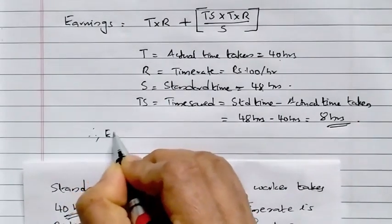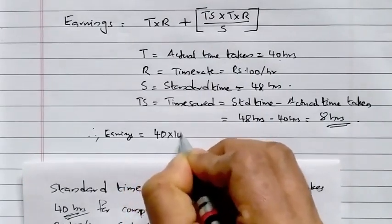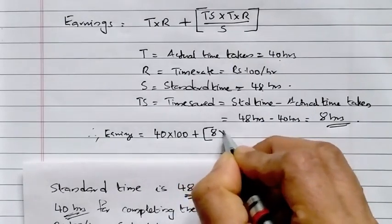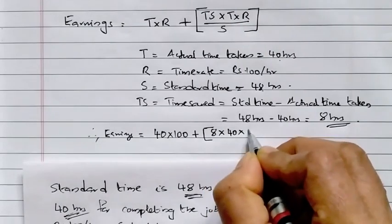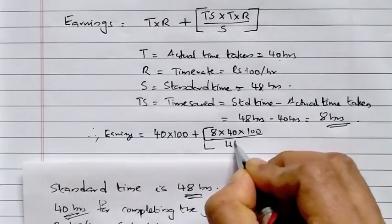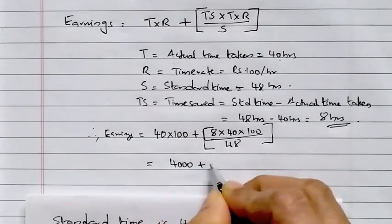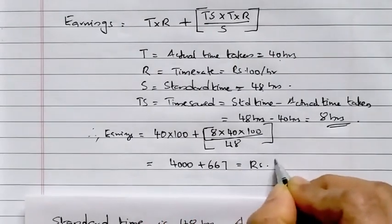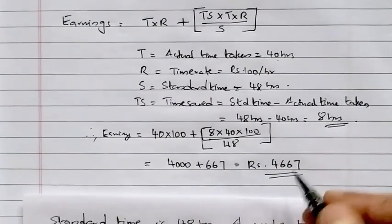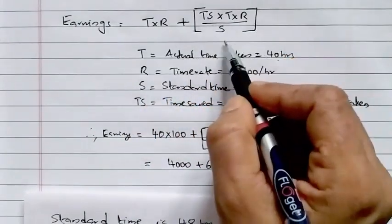Therefore, Earnings = T × R + (Ts/S) × T × R = 40 × 100 + (8/48) × 40 × 100 = 4,000 + 667 = Rs. 4,667. So the worker's earnings under the Rowan Plan are Rs. 4,667.